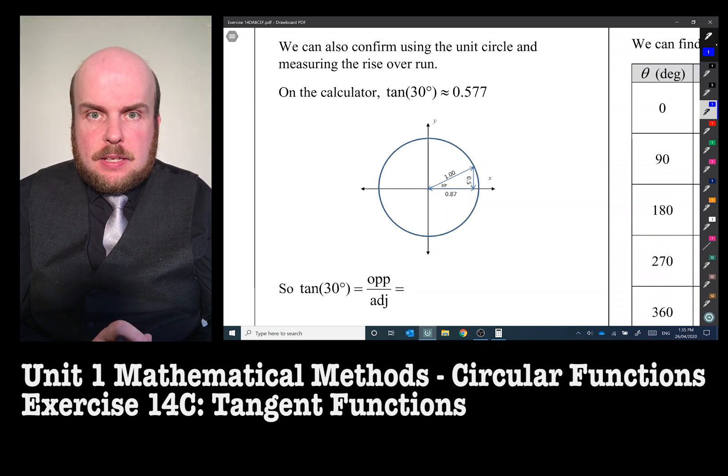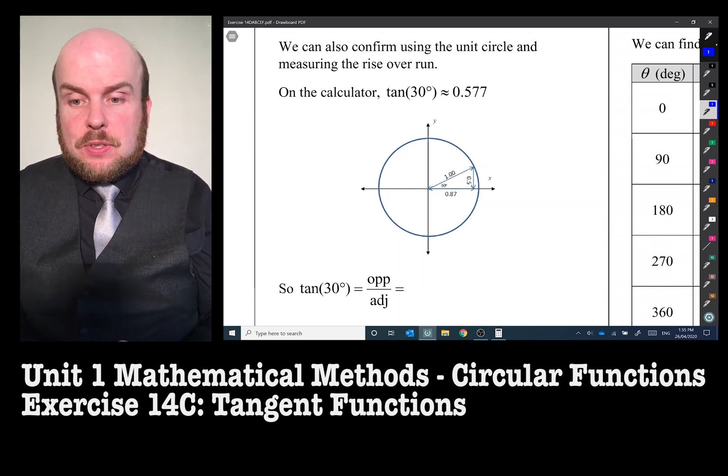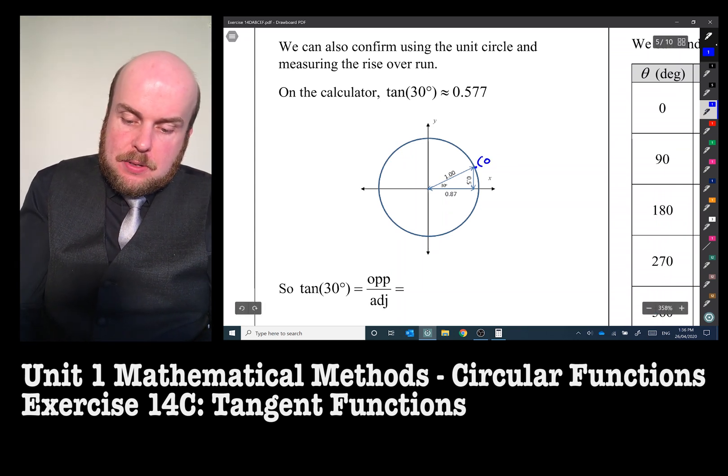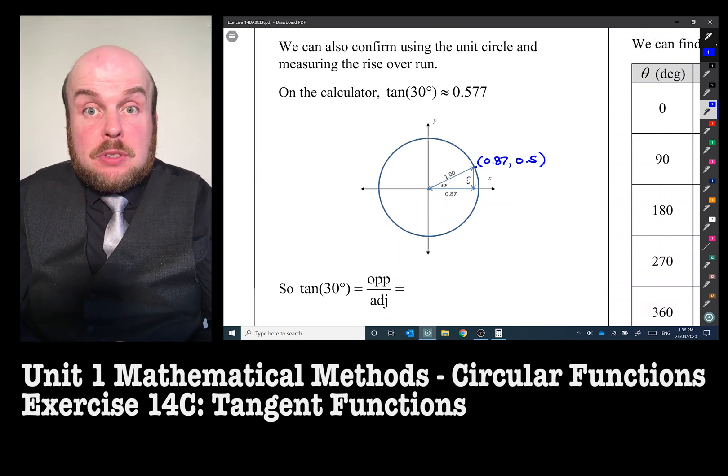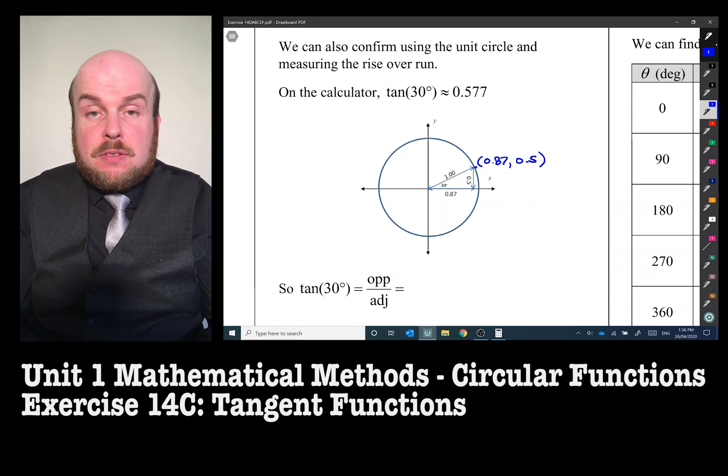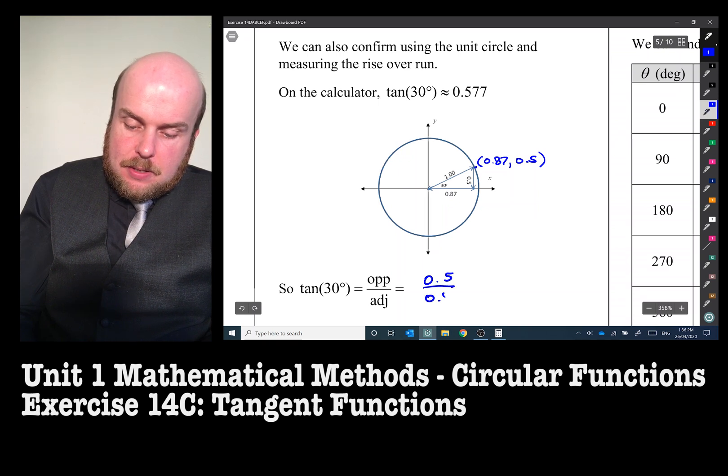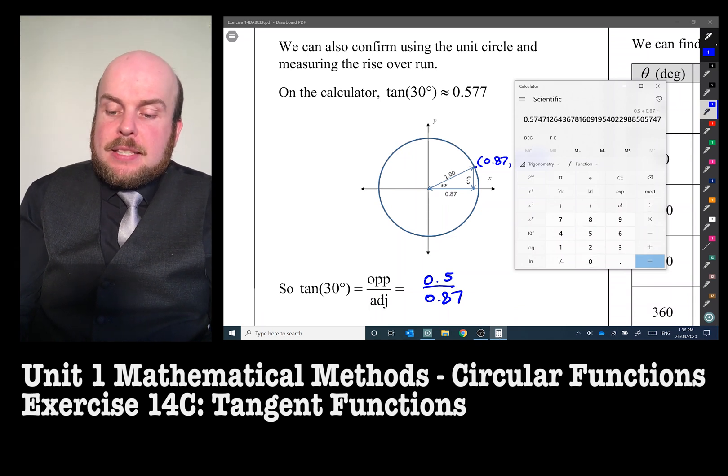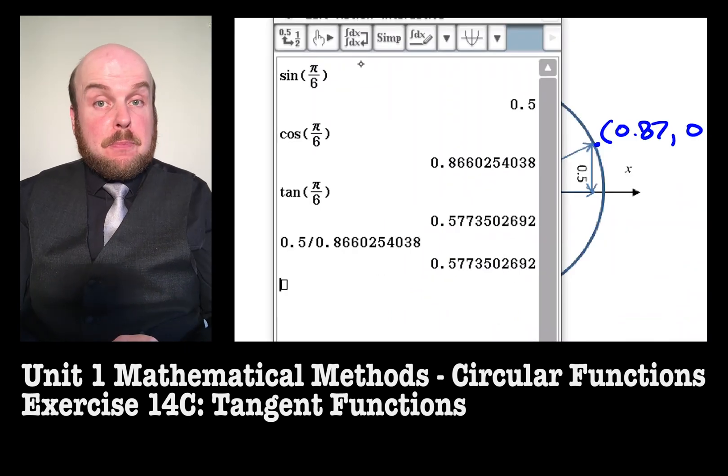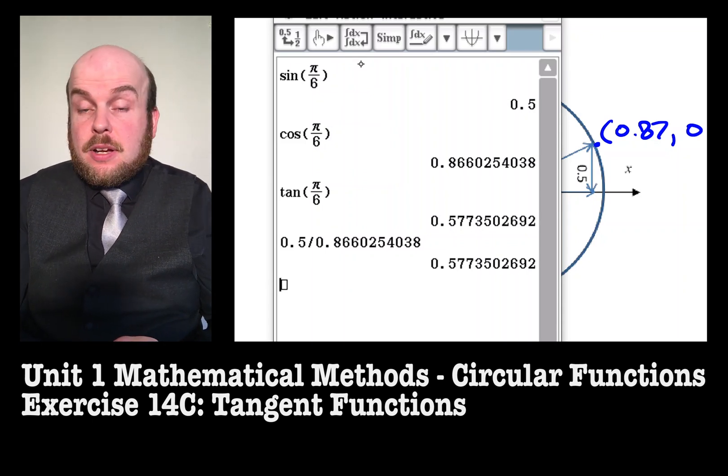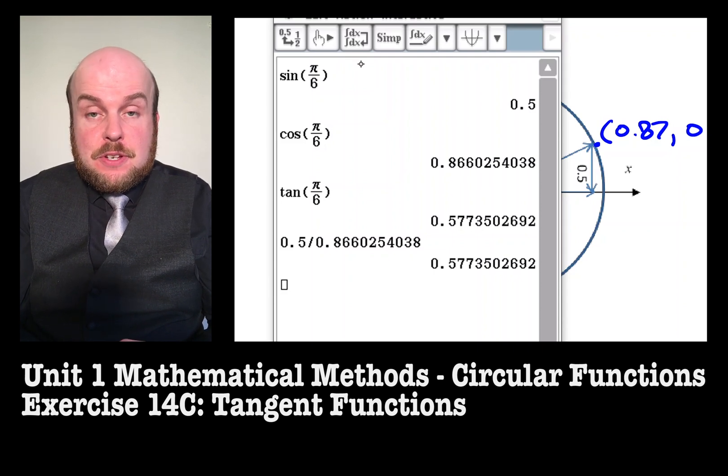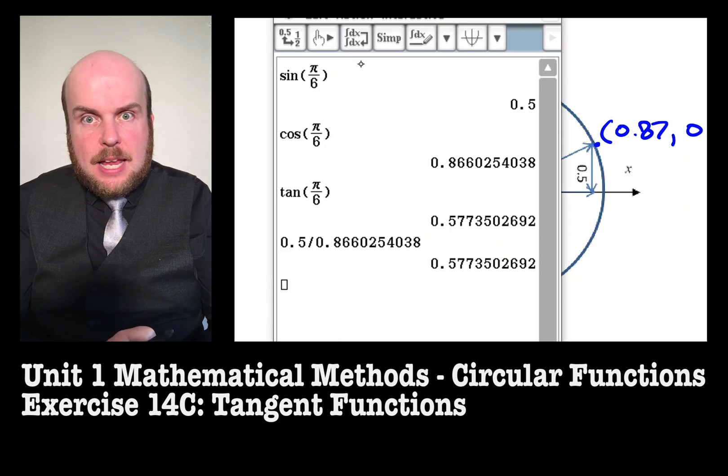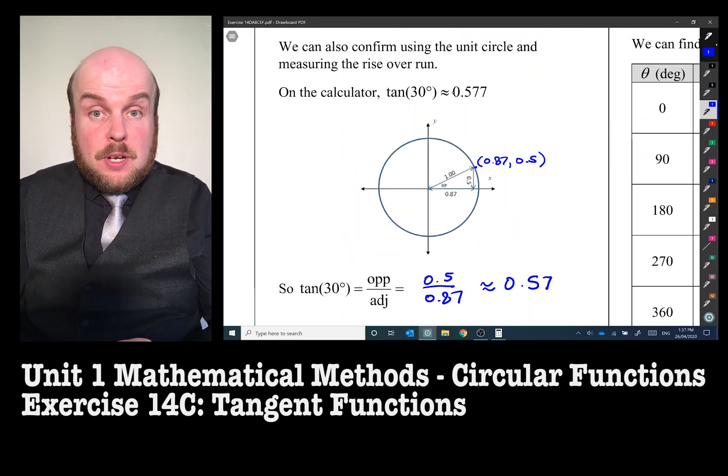We can also confirm this using the unit circle. From our example earlier, where we did π/6 and found that the coordinates here would be 0.87, 0.5. Well, the tangent will definitely be the sine value divided by the cos value here. So 0.5 divided by 0.87. Of course, these are rounded figures, so it'll be a little bit off. But we can see it's very close to what the actual tan of the angle is. The unrounded figures will get us the exact tan value that we need. So therefore, we can use the unit circle to confirm our suspicions.